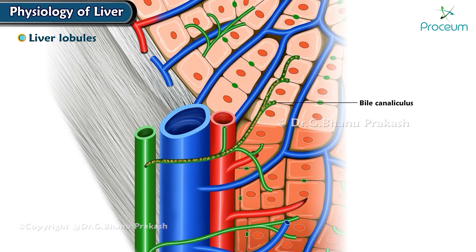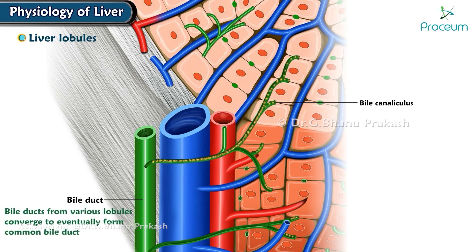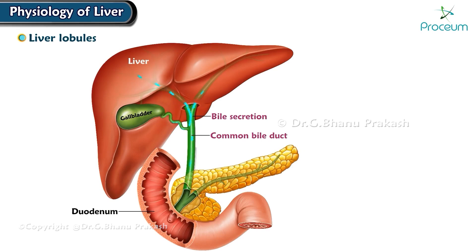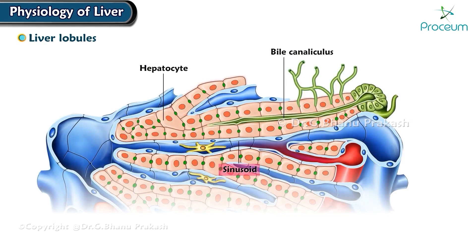Hepatocytes continuously secrete bile into these thin channels, which carry the bile to a bile duct at the periphery of the lobule. The bile ducts from the various lobules converge to eventually form the common bile duct, which transports the bile from the liver to the duodenum. Each hepatocyte is in contact with a sinusoid on one side and a bile canaliculus on the other side.